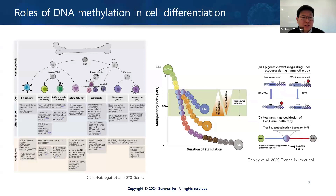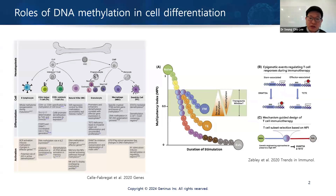Every cell has a special signature, which can be shown by DNA methylation patterns. As you can see here, immune cells can be differentiated into different types and they all have unique DNA methylation patterns, which can be explained by the methylome. Methylation patterns are also important to reprogram cell determination.